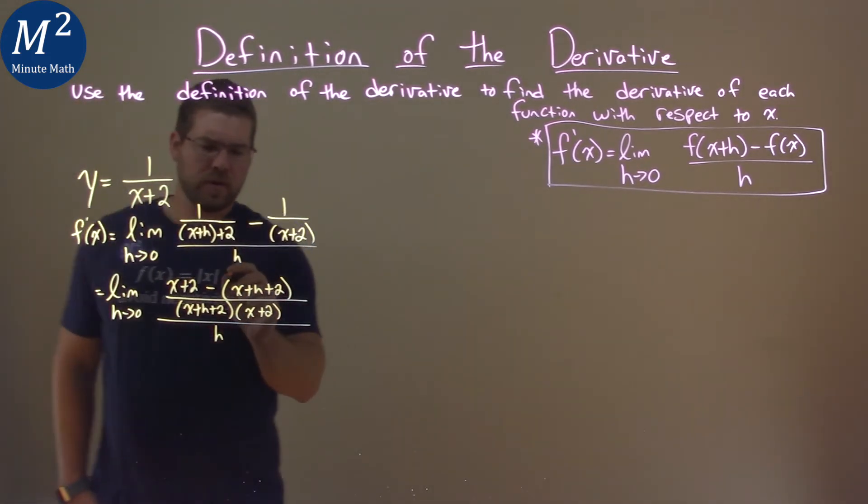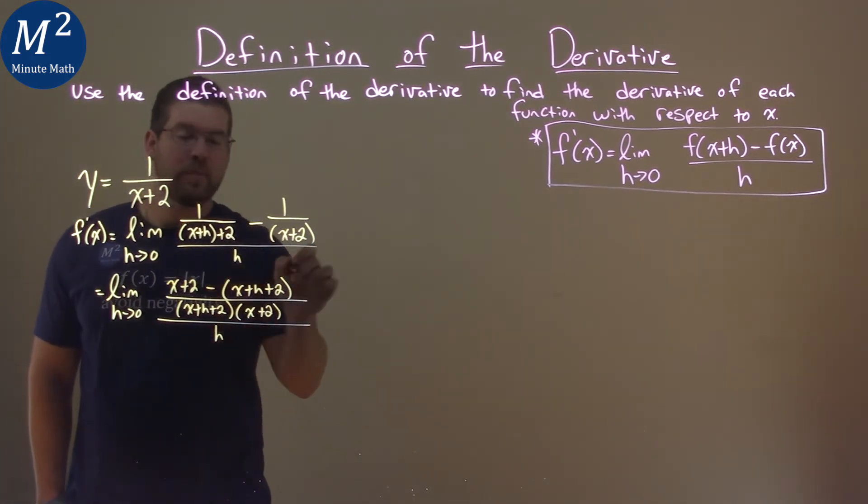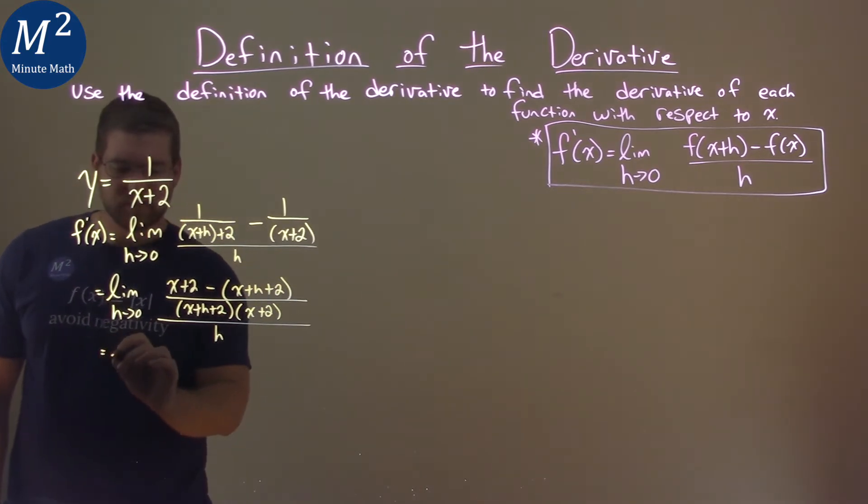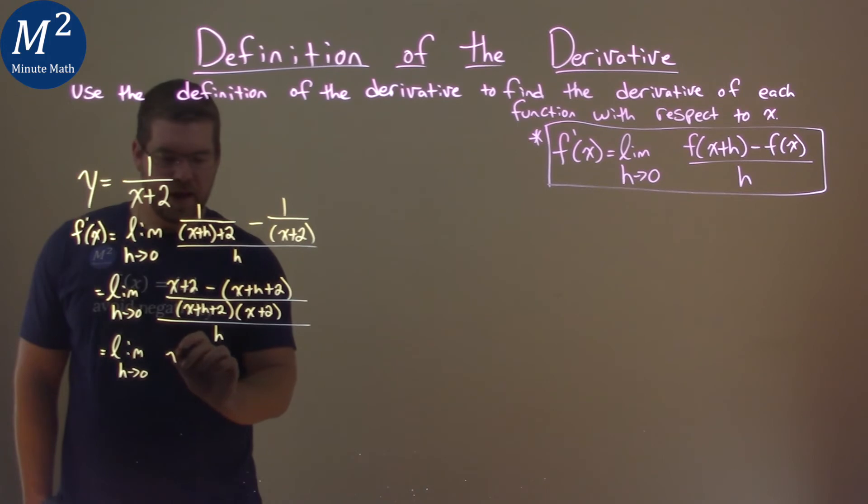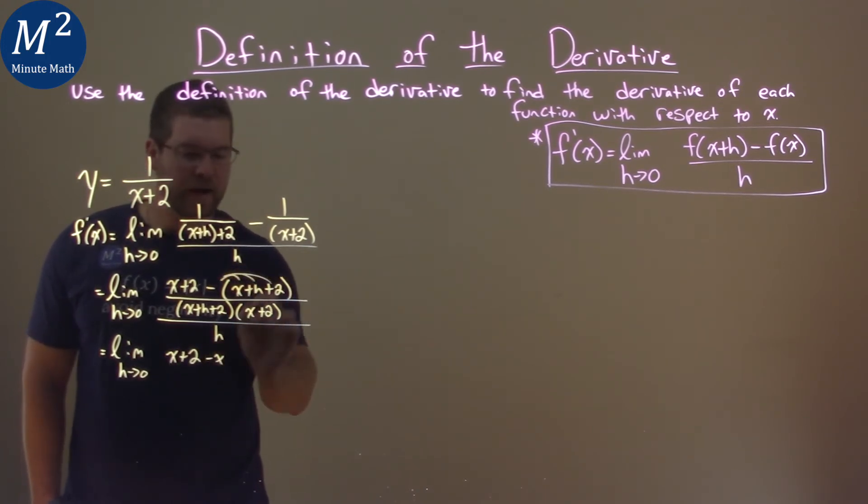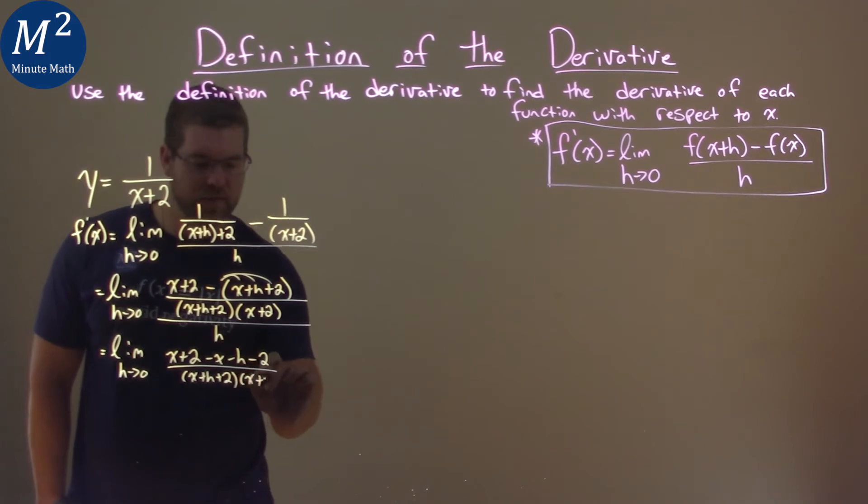Now notice here that this numerator, we distribute the minus sign, so we have the limit as h approaches 0, we have x plus 2 minus x minus h minus 2, all over x plus h plus 2 times x plus 2, all over h.